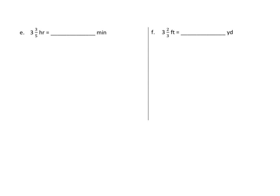A few more examples here. I have to remember to put my headphones on, so the sound is probably a little better. So, I have 3 and 3 fifths hours equals 3 and 3 fifths times 1 hour. 1 hour is the same as 60 minutes, so we have 3 and 3 fifths times 60 minutes. Again, changing our mixed number into an improper fraction. 3 times 5 is 15, plus 3 is 18. So, we have 18 fifths times 60.